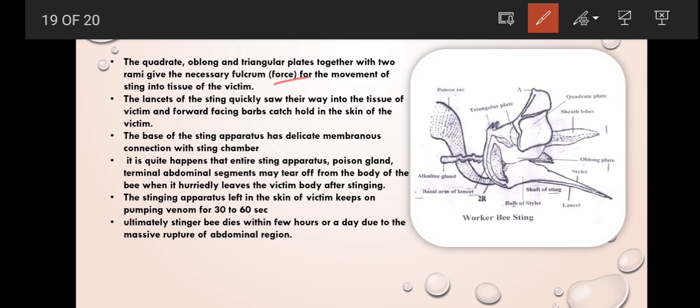The lancet of the sting quickly saw their way into tissue of the victim. The base of sting apparatus has delicate membranes connection with the sting chamber. It is quite happen that the entire sting apparatus and poison gland and abdominal segments may tear off from the body when it is pulled from the victim body after stinging. The sting apparatus left in the skin of the victim keeps on pumping the venom for about 30 to 60 seconds. Ultimately sting bee dies within a few hours or within a day due to massive rupture of abdominal segment.